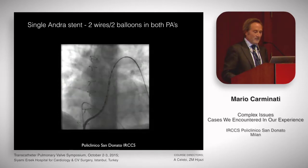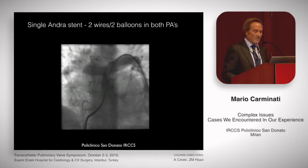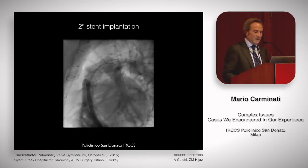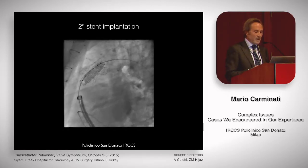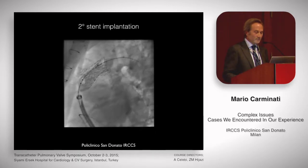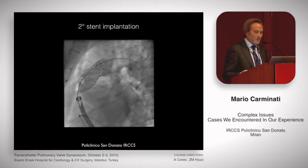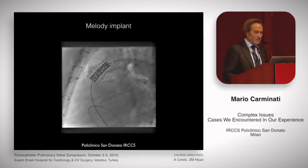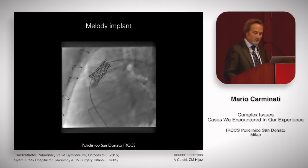You see the bifurcation stenosis, the two wires, the two balloons, and a single stent — expansion of the distal portion. Then we draw the sheath and expand the rest of the stent, eventually achieving a stable position and abolishing the residual stenosis.